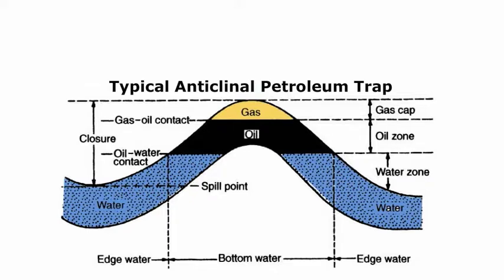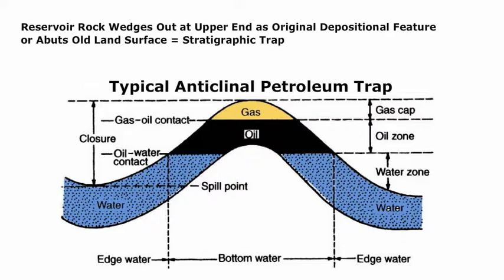The simplest form of the structural trap is the anticline and the dome, each of which has a convex upper surface. Many oil and gas accumulations are trapped in anticlines or domes, structures that are generally more easily detected than other types of traps. There are also examples in which the reservoir rock wedges out at its upper end as an original depositional feature, due to lateral variation in deposition or abutting against an old land surface.